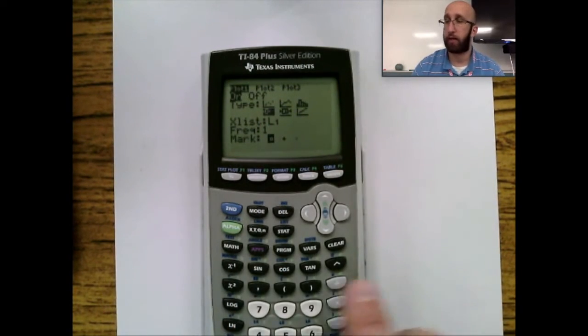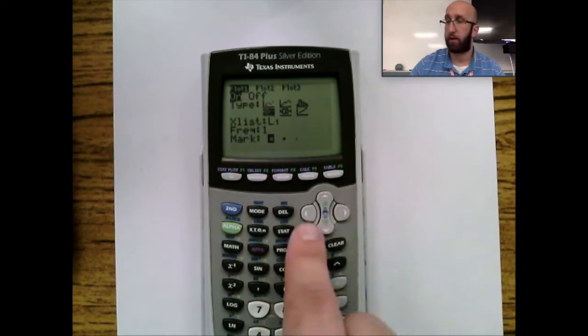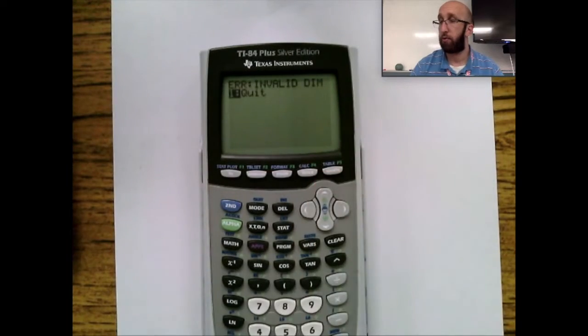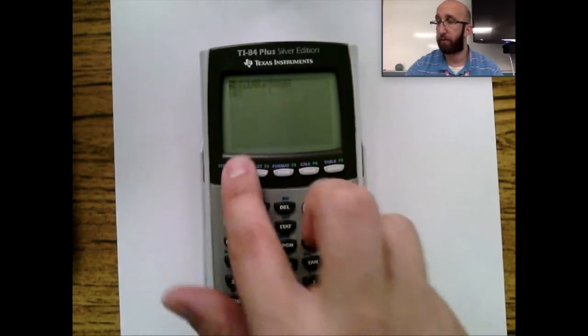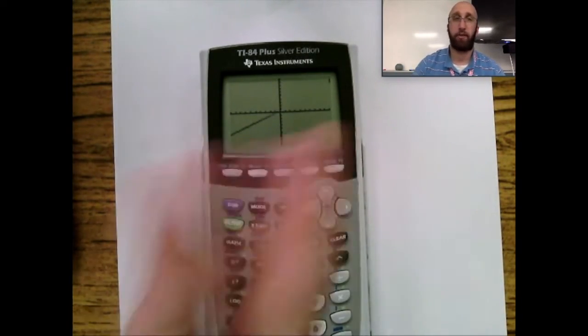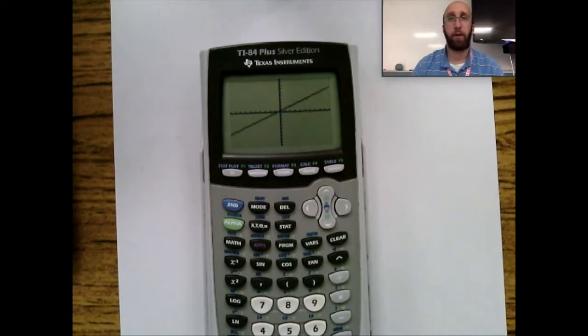Whenever you're ready to graph it, you have the STAT PLOT on. This is probably going to error out on me, so I can't exactly do it. You would hit GRAPH, and let me fix stuff really quick. You would hit GRAPH, and you'd probably be like, this is from algebra, you'll be like, where's my graph at?